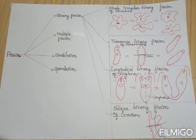The third type of binary fission is longitudinal binary fission. Here, the nucleus and the cytoplasm divide along the longitudinal axis of the organism. The example for longitudinal binary fission is euglena.